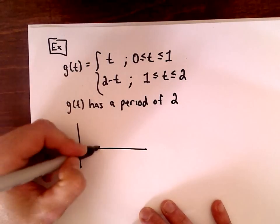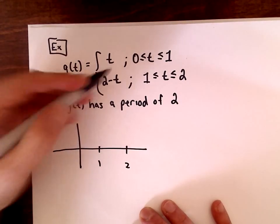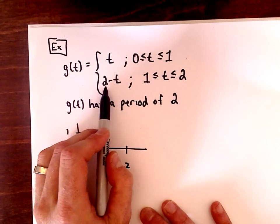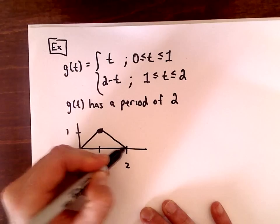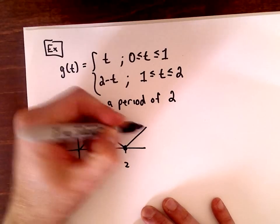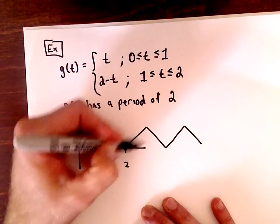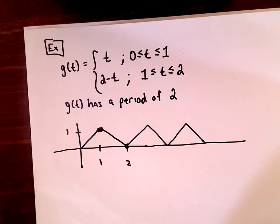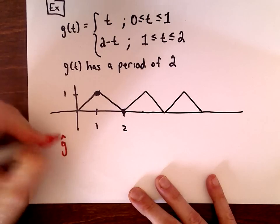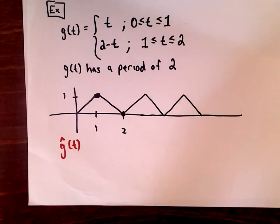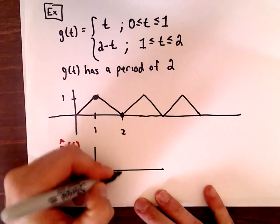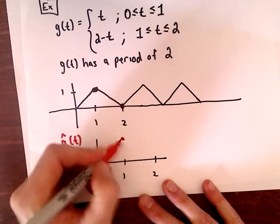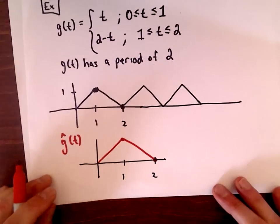If you graph g of t over the interval from 0 to 1, it looks like a straight line going up, and from 1 to 2 it's the function 2 minus t, which goes back down. Then g of t just keeps repeating that triangular shape forever.